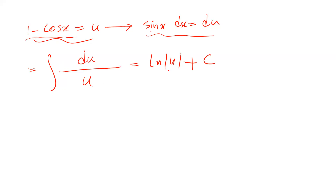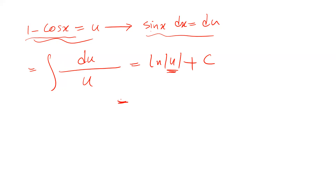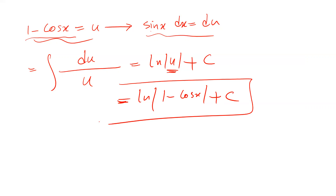So all you need to do is substitute the parameter u back with its definition, which is 1 minus cosine x. Therefore this one will be equal to ln|1 minus cosine x| plus c, which is the constant of integration, and this is the solution to our integral. I hope you found this video helpful. Thank you.